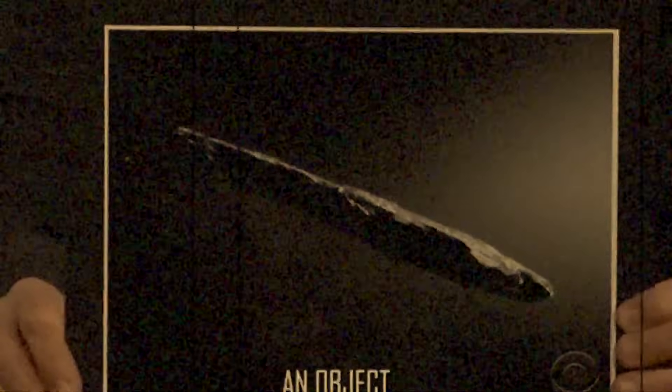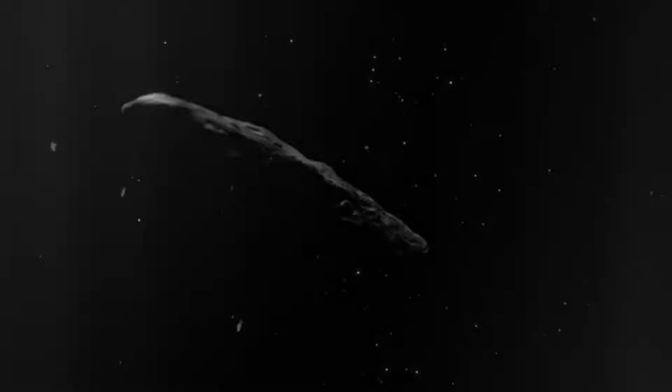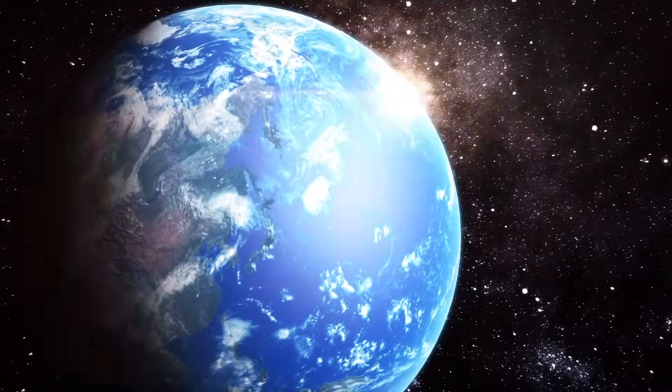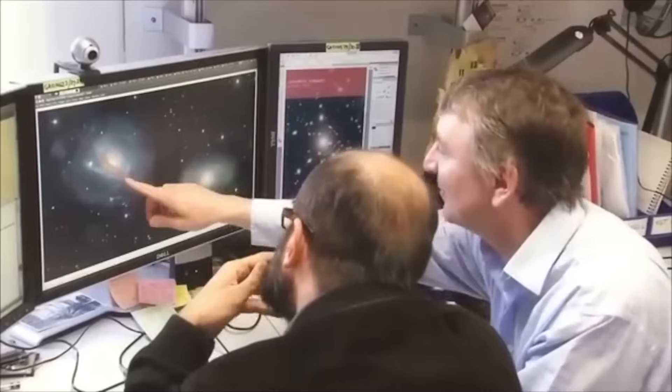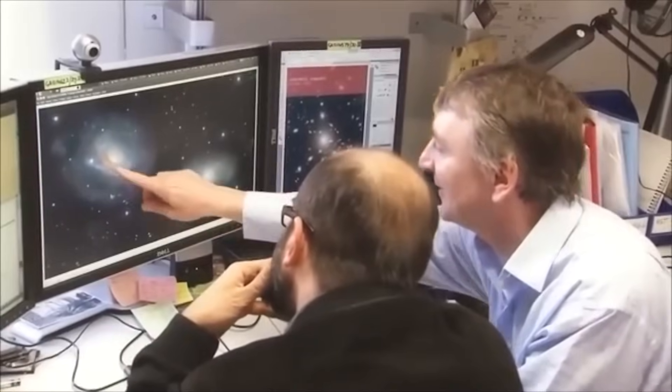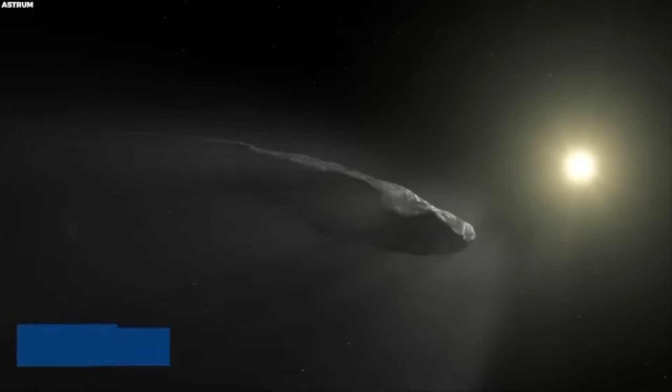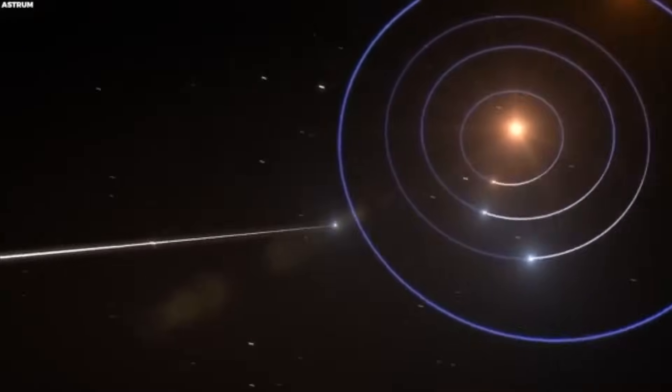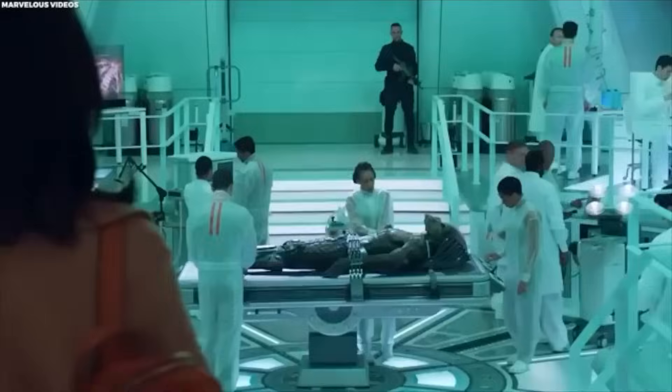First time ever an object from interstellar space has been observed to visit our solar system. In the boundless canvas of the universe, humanity's knowledge is but a speck, with mysteries and possibilities unfurling far beyond our understanding. The enigmatic presence of the interstellar visitor, Oumuamua, stands testament to the myriad secrets the cosmos shields from our gaze.